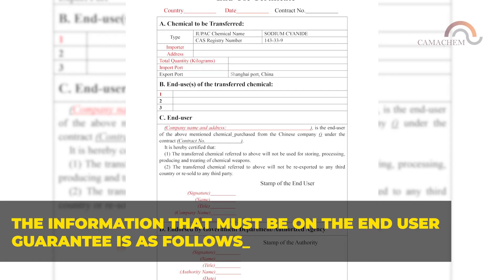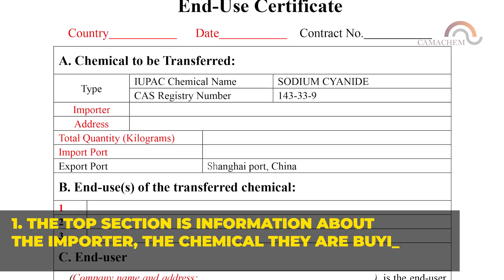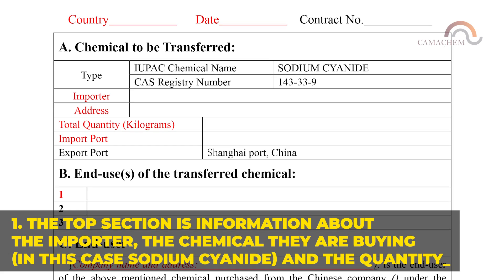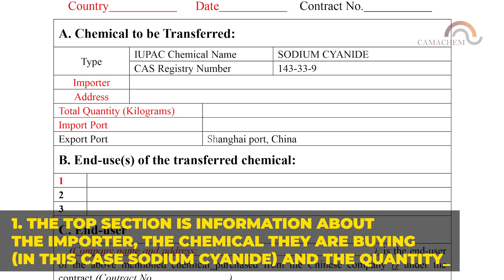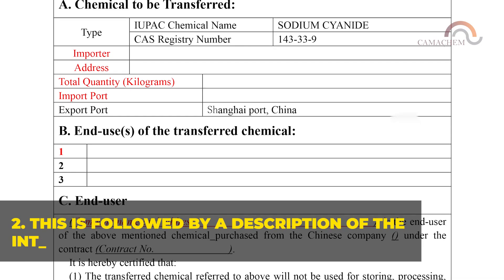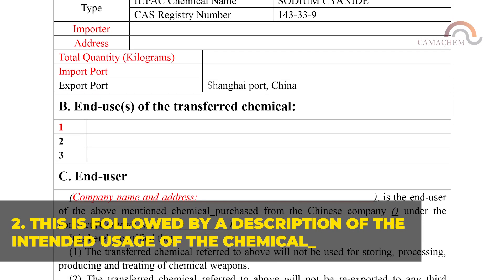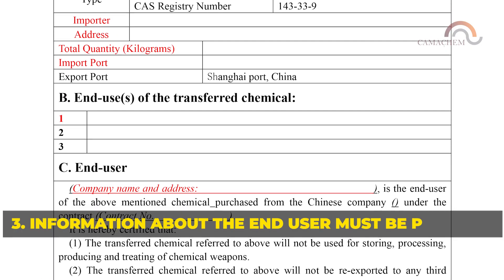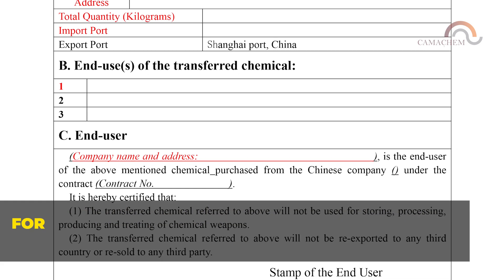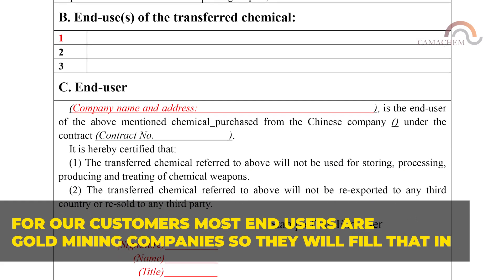The information that must be on the end user guarantee is as follows: one, the top section contains information about the importer, the chemical they are buying — in this case sodium cyanide — and the quantity. Two, this is followed by a description of the intended usage of the chemical. Three, information about the end user must be provided. For most of our customers, end users are gold mining companies.